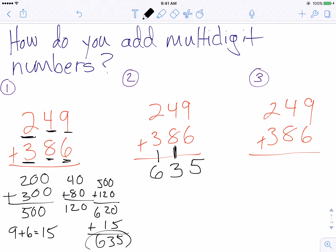The third method is just to regroup on top of the numbers, on top of the other addends. So do my ones place first. 9 plus 6 is 15. Regroup my 1 up at the top.